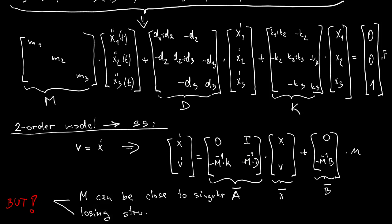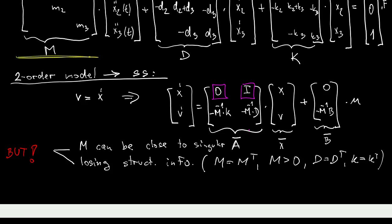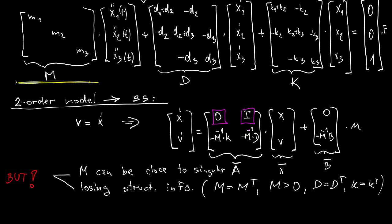The second advantage is that by doing this transformation to state space we are losing structural information. Note that in the original model we knew that the matrix M is symmetric and positive definite. The matrices D and K are symmetric, whereas now the new state matrix A does have some structure, but it may be more difficult to work with this structure.